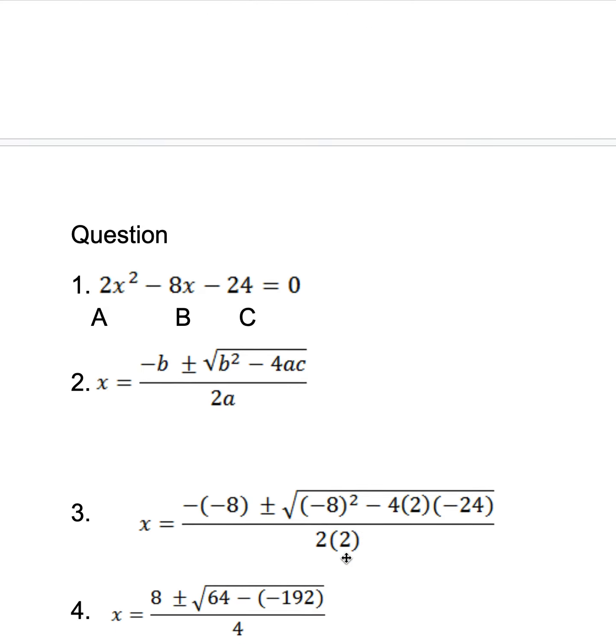X equals negative negative 8, which is positive 8, plus or minus the square root of negative 8 times negative 8, which is 64, minus 4 times 2 times negative 24, which is positive 192. So we get 8 plus or minus the square root of 64 plus 192.